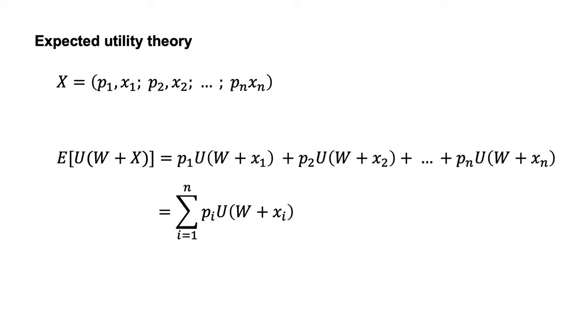There is an important note regarding outcomes X1 through to Xn. Typically, these outcomes are not just the payoffs from the gamble, but rather the agent's final position. If the agent has wealth of $100 and is offered a coin flip to win or lose $10,